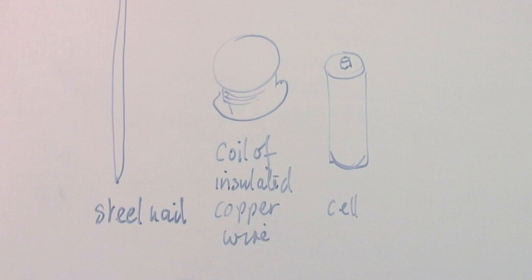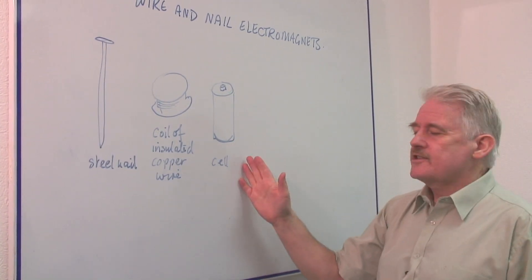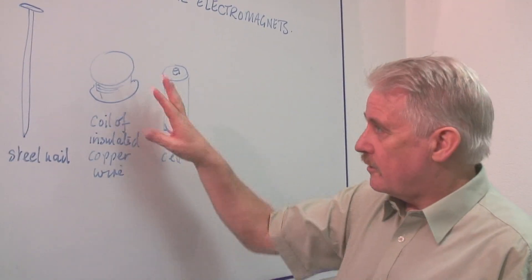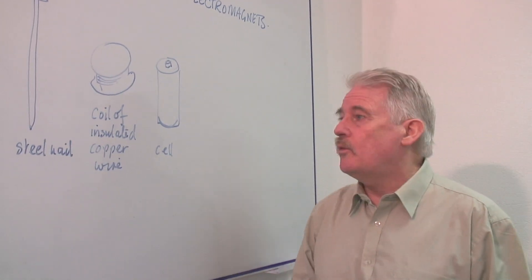So that's what you need, a coil of that, and you need some kind of cell or battery. Just be careful, don't get too high a voltage. Otherwise, you'll probably melt your plastic insulation on your copper wire.